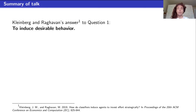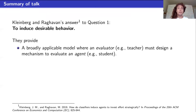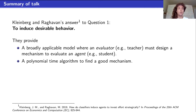Our paper is based on this broadly applicable model where you have an evaluator — think of that as the teacher — who must design some mechanism to evaluate an agent — think of that as the student. This teacher-student setting is the running example throughout this talk. Kleinberg and Raghavan show nice results about how to solve this mechanism design problem, and give a polynomial time algorithm to find a good mechanism given information about how the student's effort translates into the things that the evaluator is able to observe.